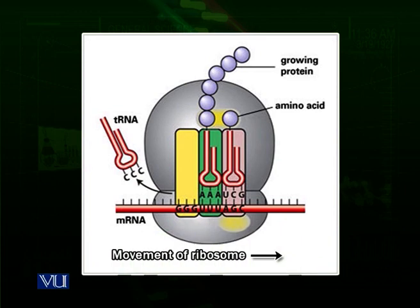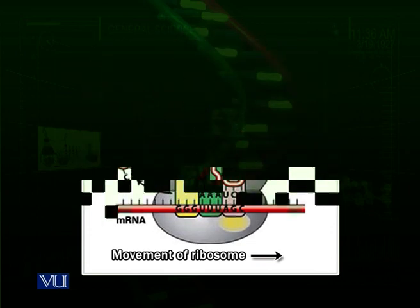In summary: initiation begins when the small ribosomal subunit comes and attaches to the messenger RNA, followed by the large ribosomal unit. Then transfer RNAs bring amino acids according to the codons, and the ribosome moves along the messenger RNA to make a polypeptide chain. At the end, due to the releasing factor, everything is released and a new protein is formed — which may be a structural protein or a functional protein.